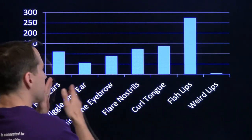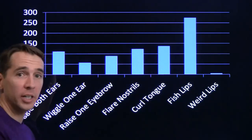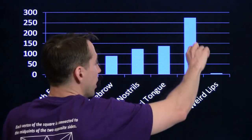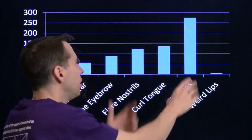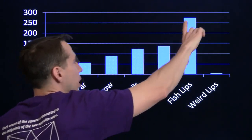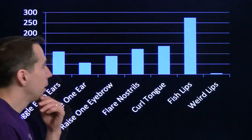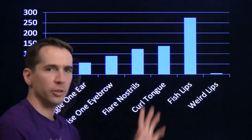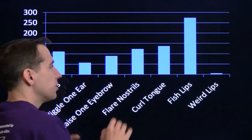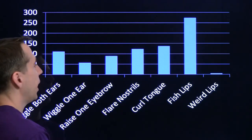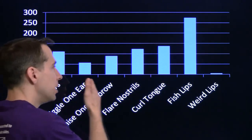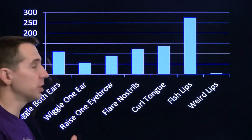So the bar chart here allows us to compare pairs very easily. We can see the relative comparison too. Fish lips is about twice as common as these, and it's just way easier than the weird lips. So the bar chart gives us a nice graphical quick glance way to compare different skills to each other.